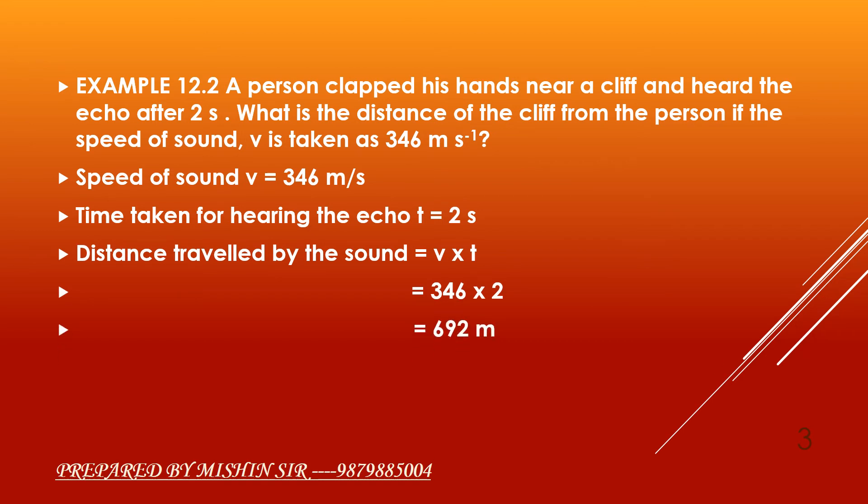Now, we need to find distance of the person from the cliff which is equal to 692 upon 2 which is equal to 346 meter.